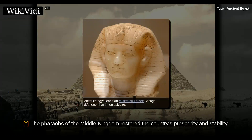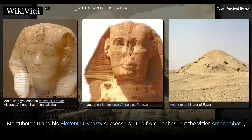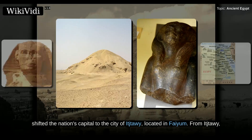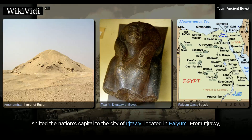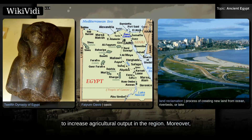The pharaohs of the Middle Kingdom restored the country's prosperity and stability, thereby stimulating a resurgence of art, literature, and monumental building projects. Mentuhotep II and his 11th dynasty successors ruled from Thebes, but the vizier Amenemhat I, upon assuming kingship at the beginning of the 12th dynasty around 1985 BC, shifted the nation's capital to the city of Itjtawy, located in Faiyum. From Itjtawy, the pharaohs of the 12th dynasty undertook a farsighted land reclamation and irrigation scheme to increase agricultural output in the region.